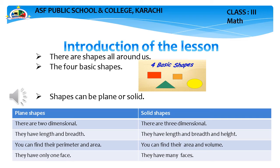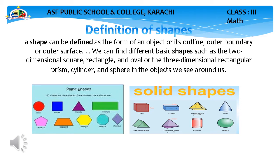Definition of shapes: a shape can be defined as the form of an object, or its outline, outer boundary, or outer surface. We can find different basic shapes, such as the two-dimensional square, rectangle, and oval, or the three-dimensional cuboid, cylinder, and sphere in the objects we see around us.